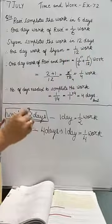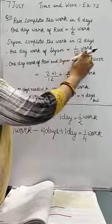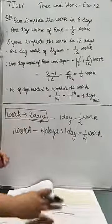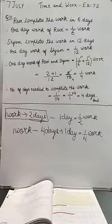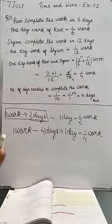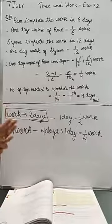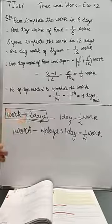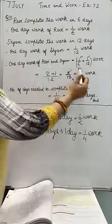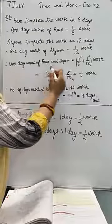Shyam completes the work in 12 days. So one day's work of Shyam is one-twelfth of the total work. Therefore, one day's combined work of Ravi and Shyam equals one-sixth plus one-twelfth.